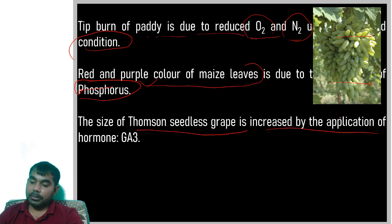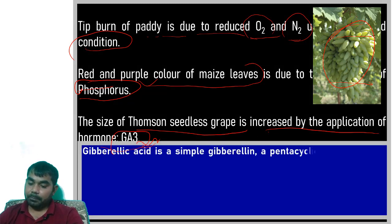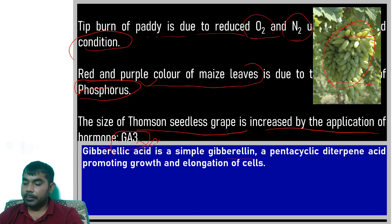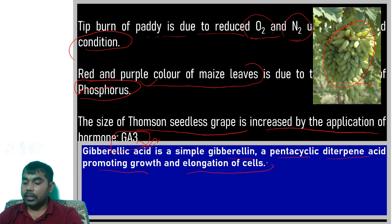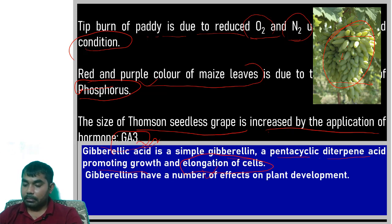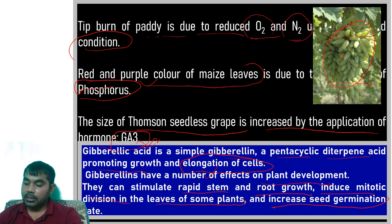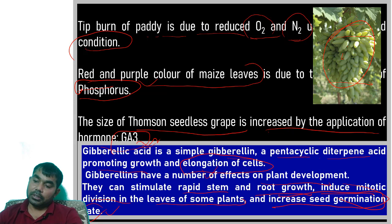The size of Thompson seedless grape is increased by the application of GA3 (gibberellic acid). GA3 is a pentacyclic diterpene acid that promotes growth and cell elongation, which is why grape size increases. It also stimulates rapid stem and root growth, induces mitotic division in leaves of some plants, and increases seed germination rate. GA3 is applied when we need to increase grape berry size.